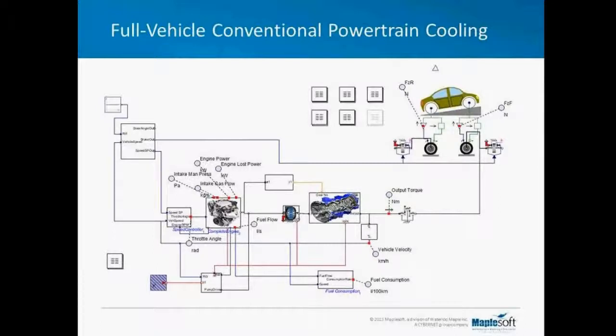This is a thermal model of an entire automotive system. It consists of a mean value engine model and an automatic transmission. All lost power is assumed to be converted to heat. The engine temperature is controlled using a liquid cooling system with a radiator and a fan, and MapleSim's thermal modeling tools play a small but critical part in this model.